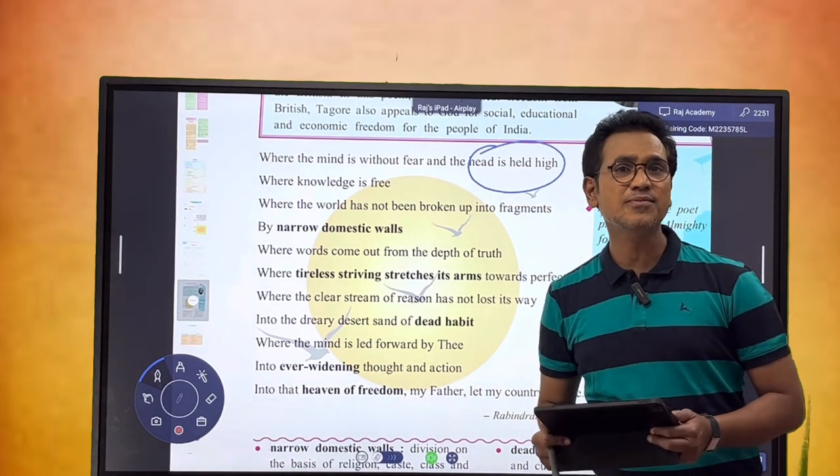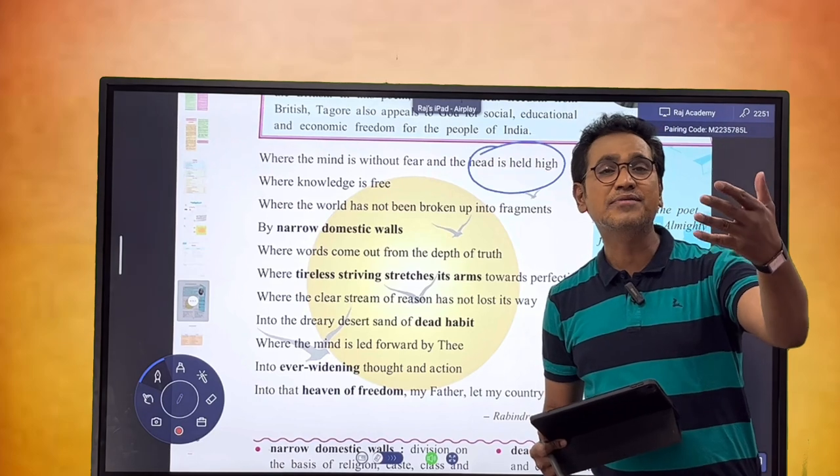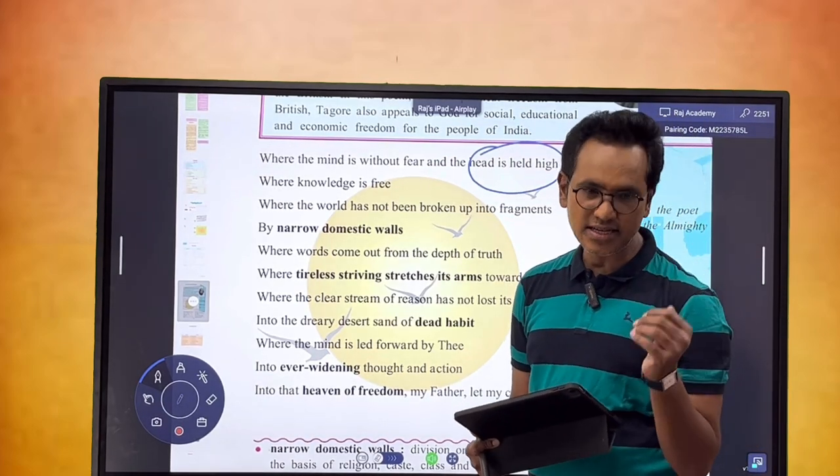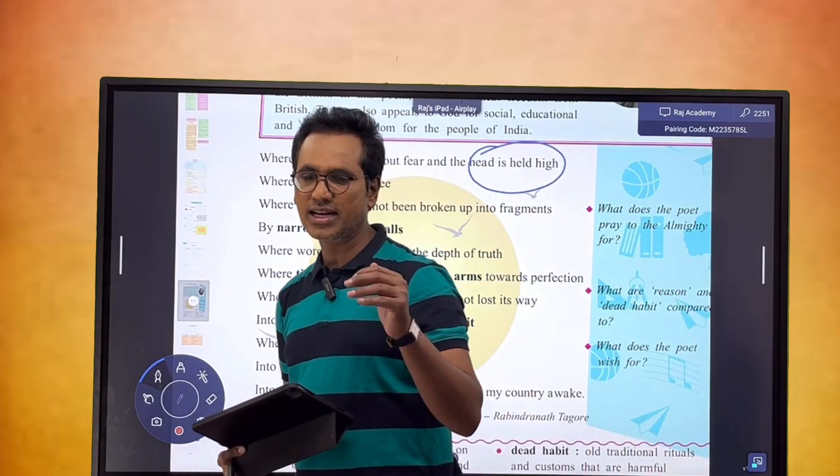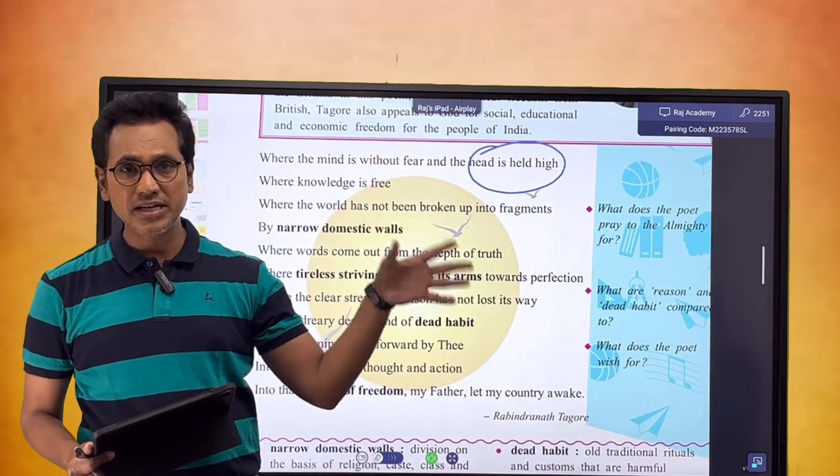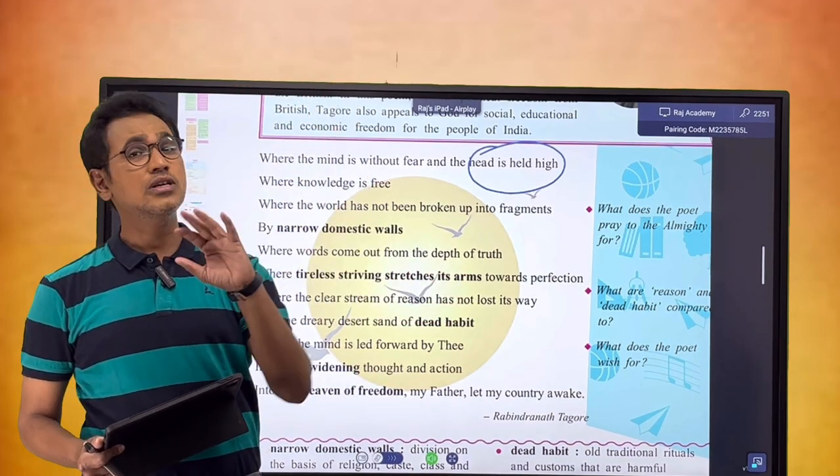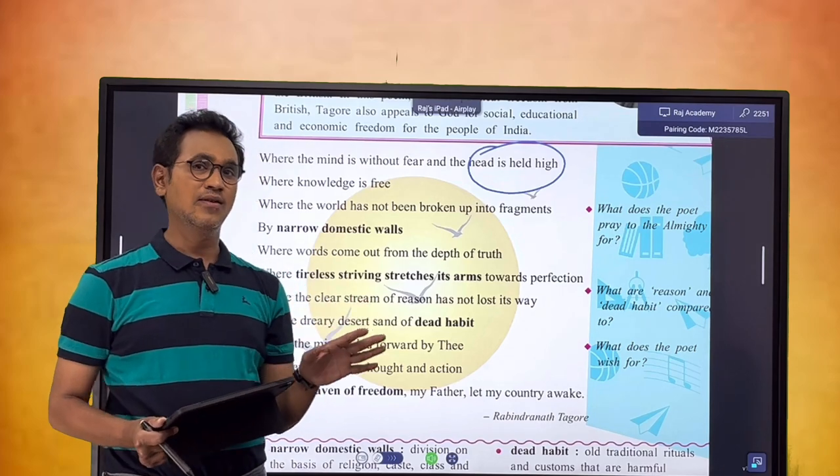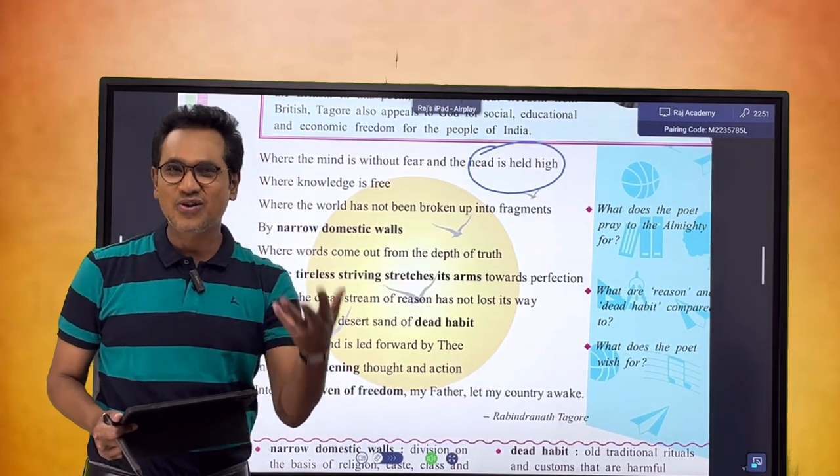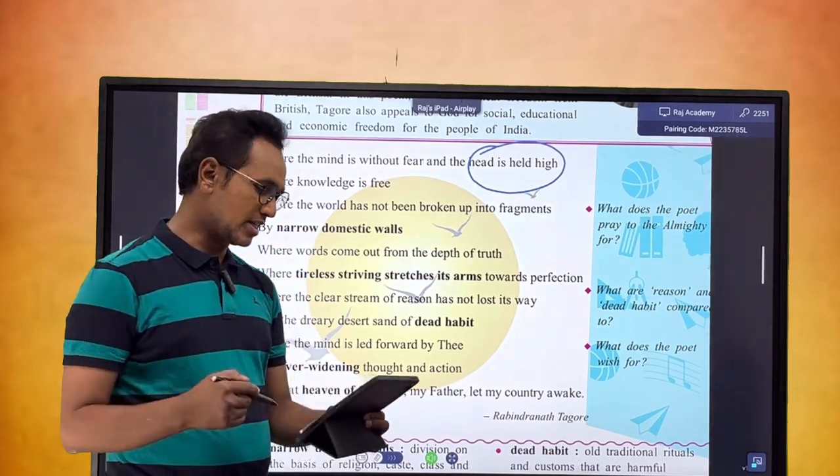The poet wishes that everyone in his country holds his head high in dignity. Dignity means prestige, self-esteem. This line comes from the first line: where the mind is without fear and the head is held high. This is where literature is to enlighten us.